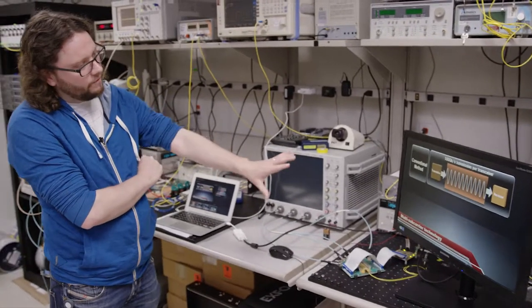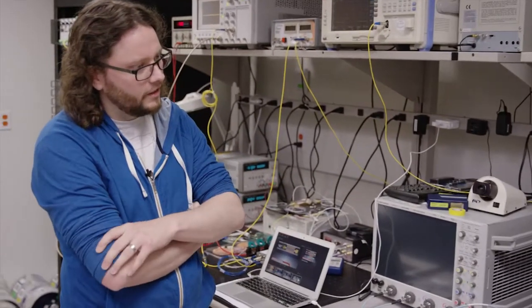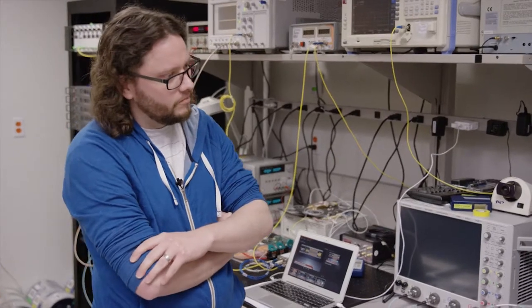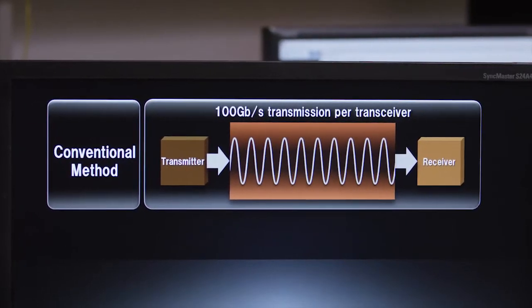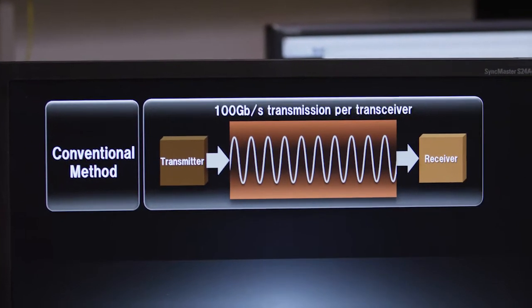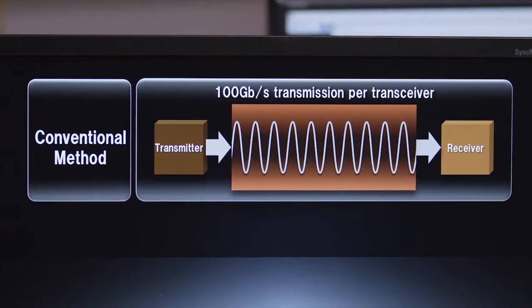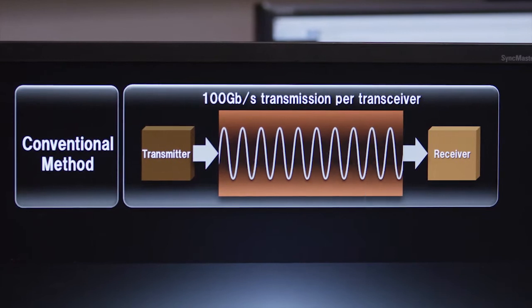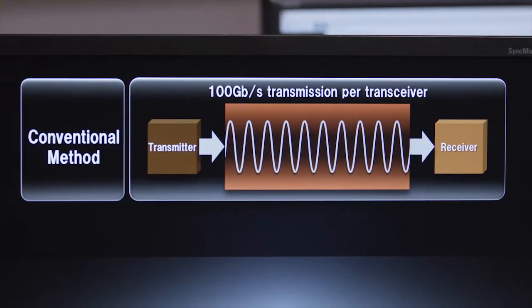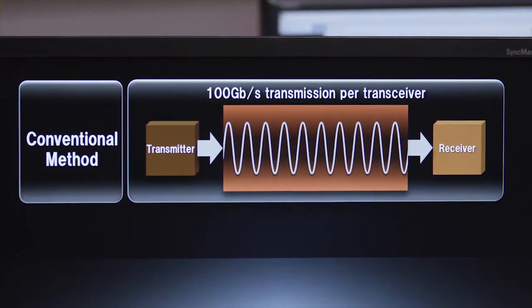This is a conventional 100 gigabit per second transmission system. These have been commercially available since about 2008-2009 and they use typically a single optical wave, so there's a single color or frequency of light, and then we modulate that in terms of changing the signal phase, the signal polarization, and this enables us to encode the data onto the light.